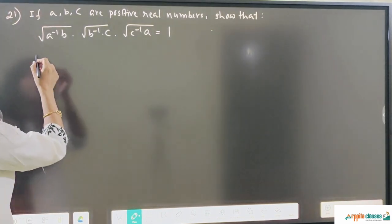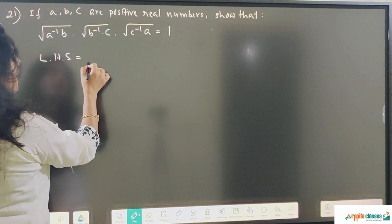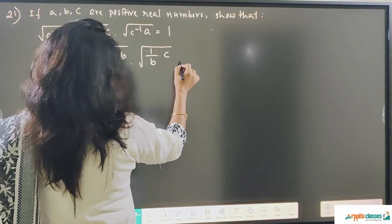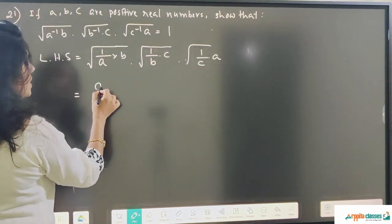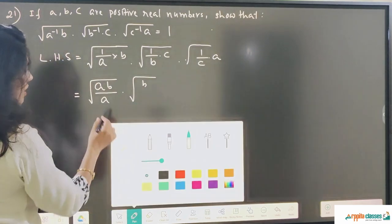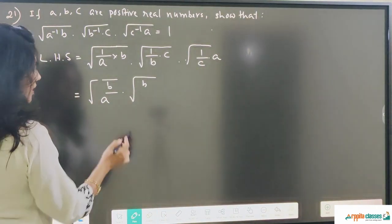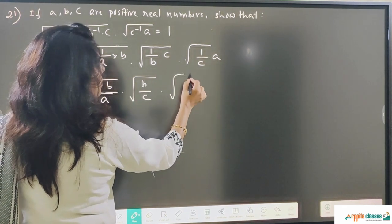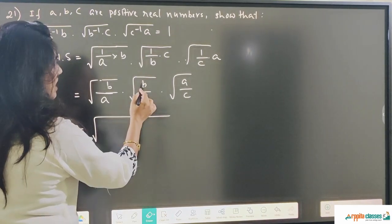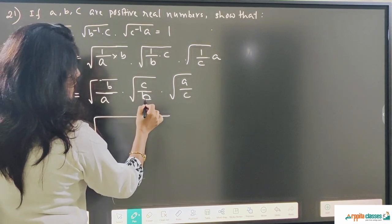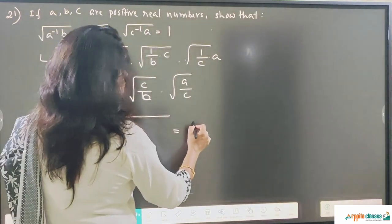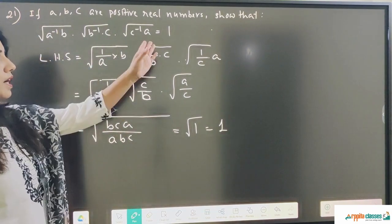Let's start with the next question — question number 21. We have to prove it, so I am taking the left hand side. a to the power minus 1 I am writing as 1 upon a into b, then 1 upon b into c, and 1 upon c into a. This gives b upon a under root, then c upon b, and a upon c. Since everything is under root, we get root of b times c times a divided by a times b times c, which equals root of 1, that is 1, which is our right hand side. So that's proved.